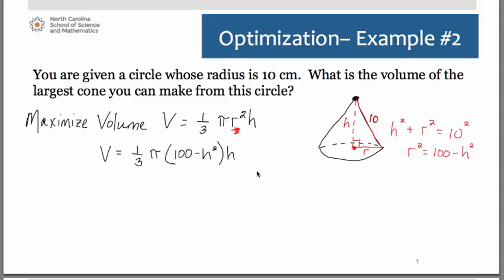Rewriting the primary equation then, we have the volume equaling one-third π times the quantity (100 - h²), which was the r², times h.